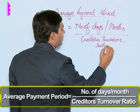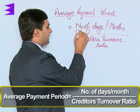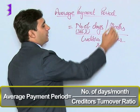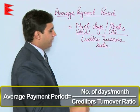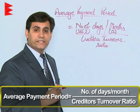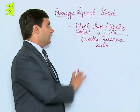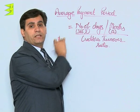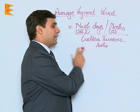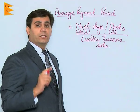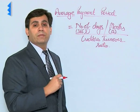In case we are required to calculate in number of days, we will write 365 for non-leap years, and for months we can write 12, upon creditors turnover ratio. So it becomes very clear that for calculating the period in which we are making the payment to creditors, first of all we are required to calculate creditors turnover ratio. Let us understand this whole concept by taking an example.